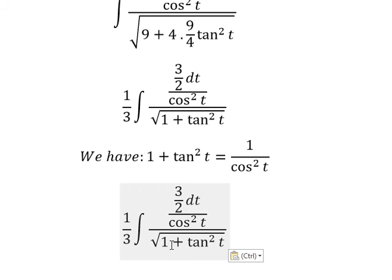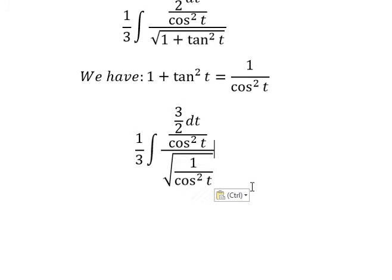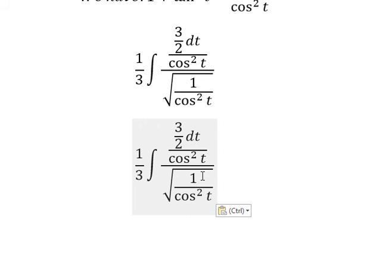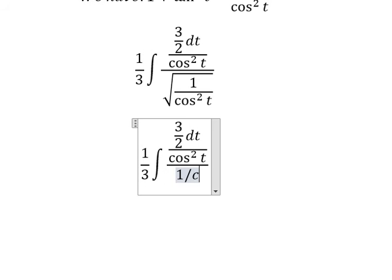We need to change this one into this one. The square root of 1 over cos squared t you will get about 1 over cos t.